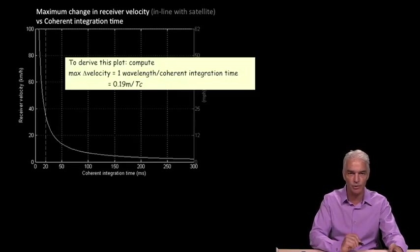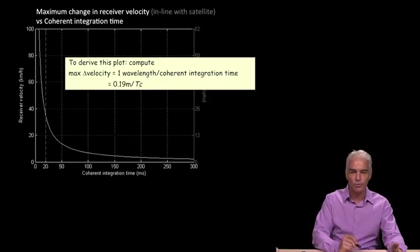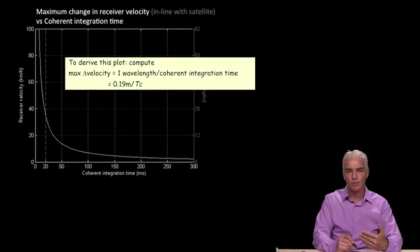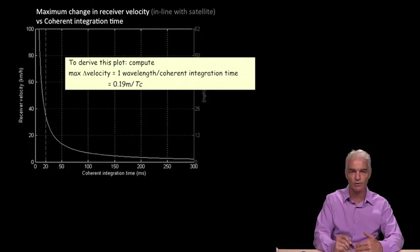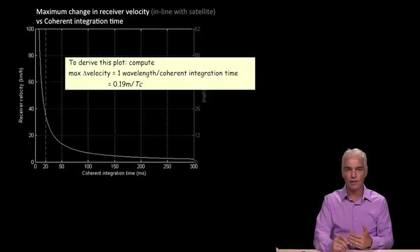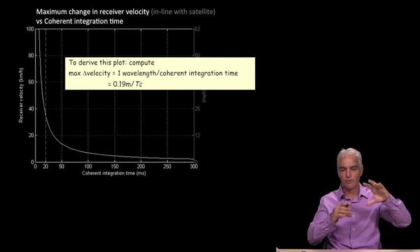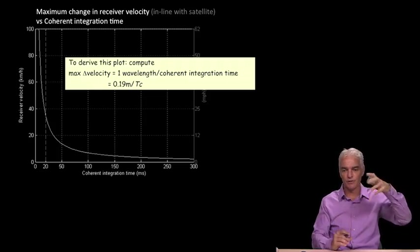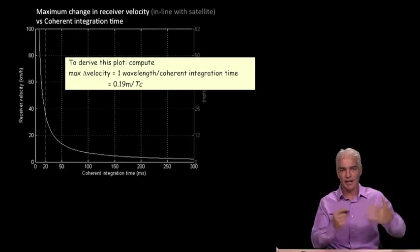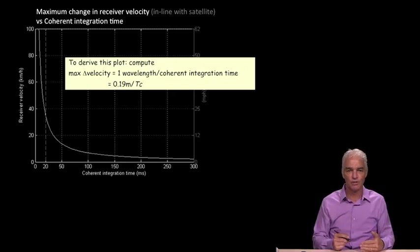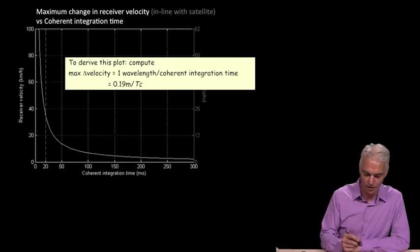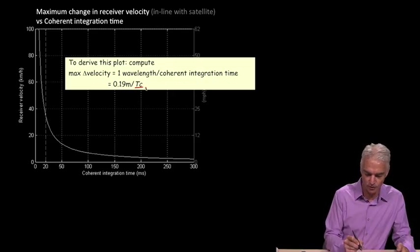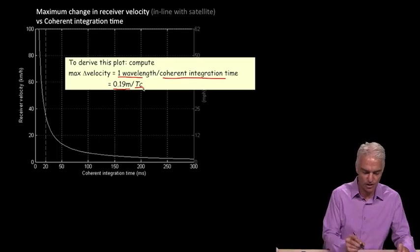However, there's another problem to deal with, which is change in receiver velocity. So what does that do? Well, a change in receiver velocity will cause a change in the phase of the signal coming in. And the maximum acceptable change in receiver velocity is going to be if you change velocity by one wavelength in the amount of time that you did the coherent integration. And think about that. If you change by one wavelength, then you'll have a perfect number of positive and negative mini peaks. And so they'll add up and cancel each other. And so that's the limit on how much change in receiver velocity you could possibly have in the tc, the integration time. So if you want to plot that, you say, well, one wavelength over the coherent integration time is 19 centimeters over tc. And we plot that.